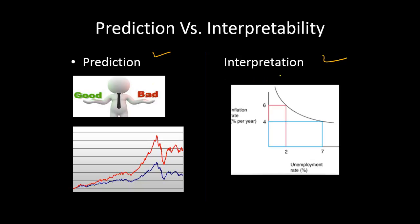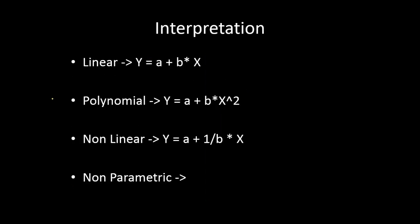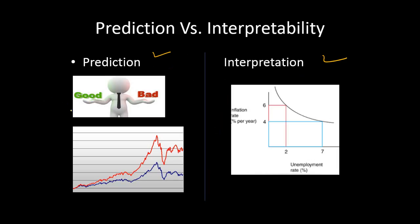Your model objective could be to figure out whether a fraud has happened, or whether a customer is good or bad — that could be one type of prediction. Or else your model could be to predict the stock price for tomorrow, for a week after, or after one month or one year.